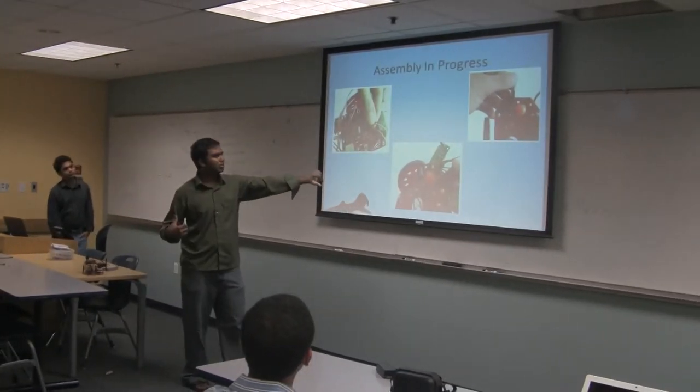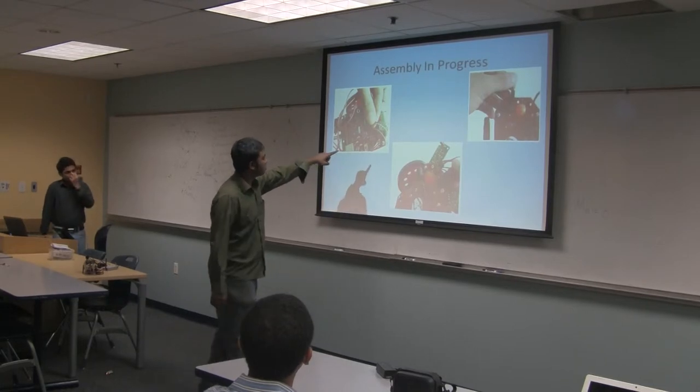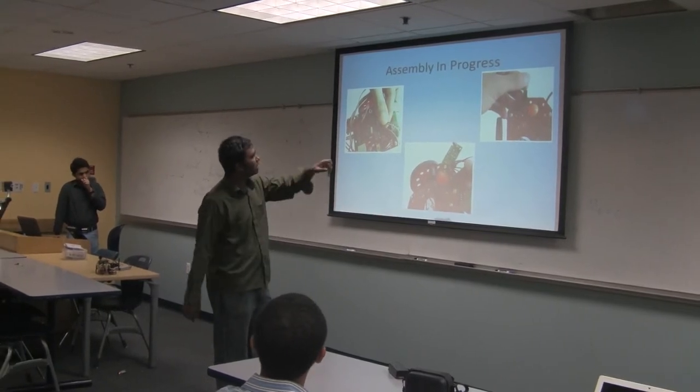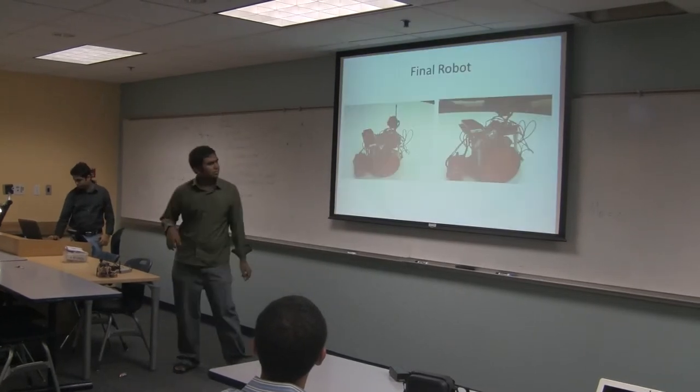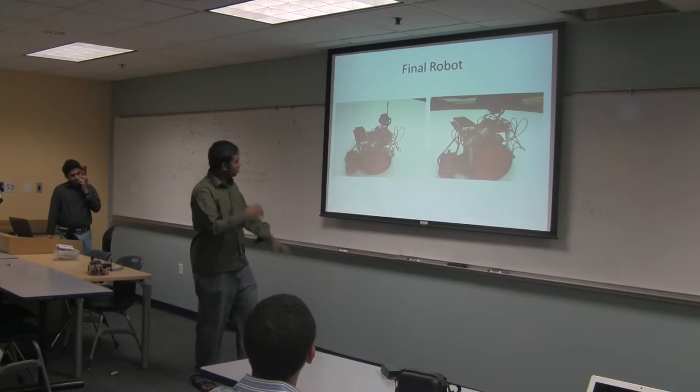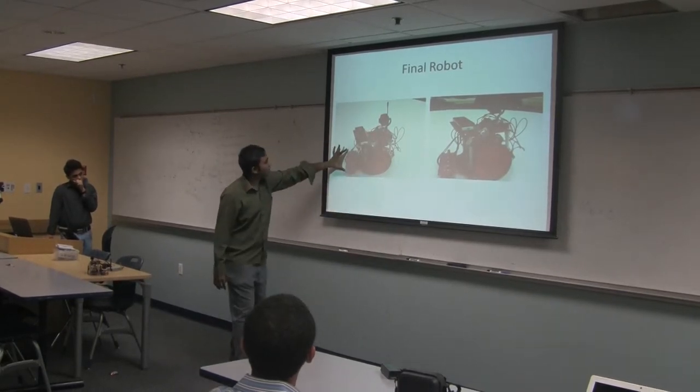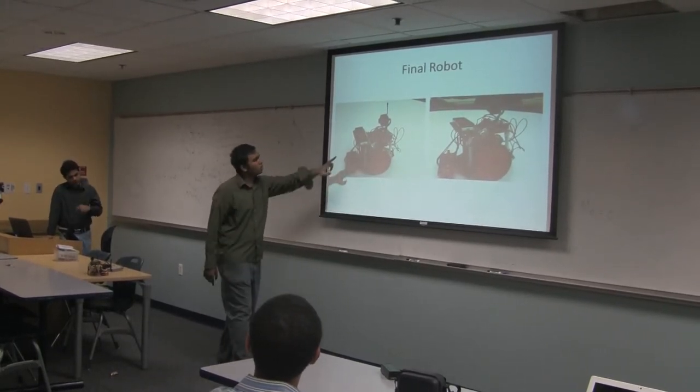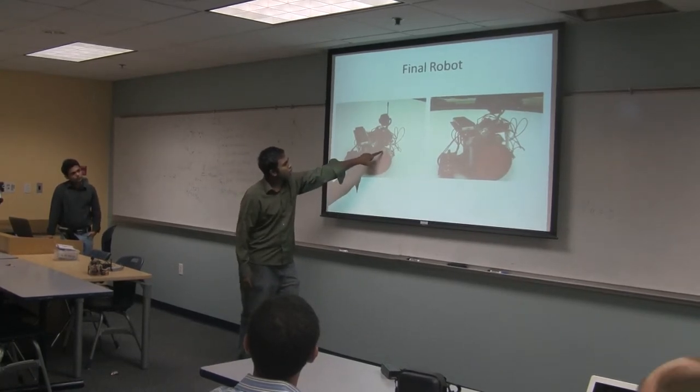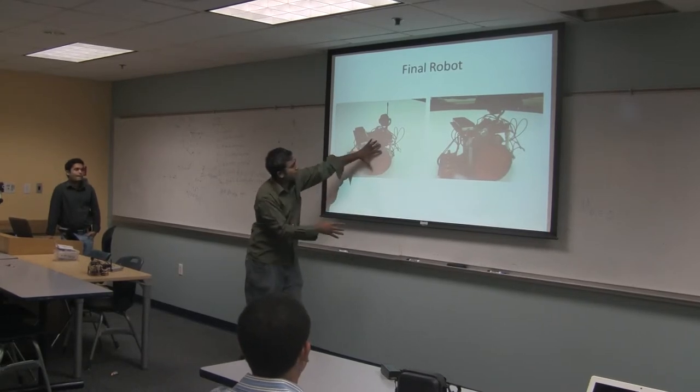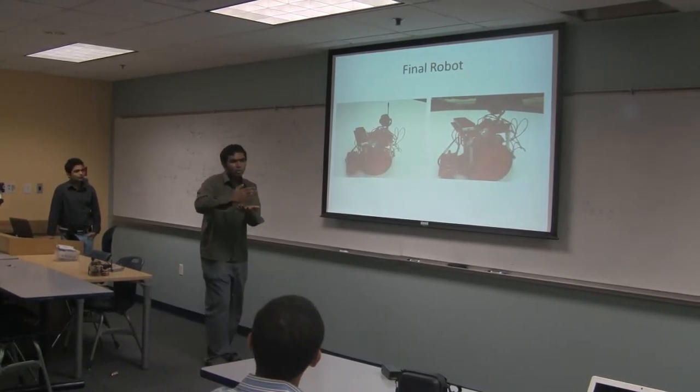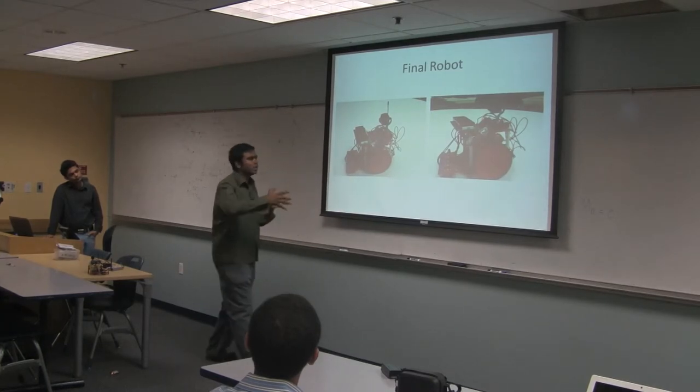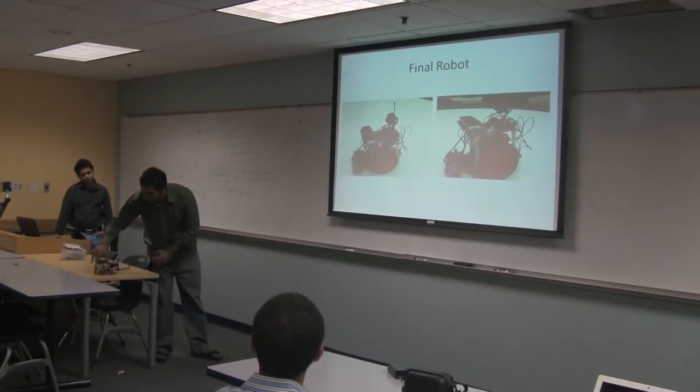These are the pictures of our robot assembly when we were in progress. We are connecting the servos to it, connecting the infrared sensors to the microcontroller, and connecting the battery. This is our final robot assembly. This is the camera. These are infrared sensors. There are batteries - we have used two 9-volt batteries, one for the camera and one for the robot. Both batteries are kept inside the robot so that it will occupy all the space it can. It's kept inside so we don't need extra space.